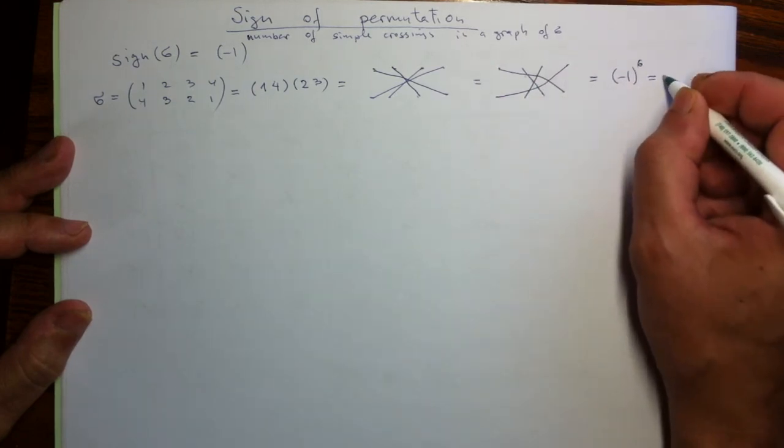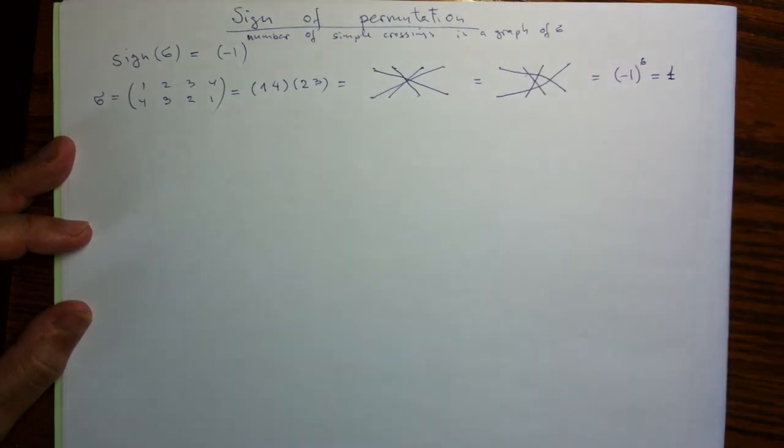So the sign of my permutation is positive one. And that is practically more or less good. Not the best probably way, but still okay. But it's not terribly good to be used as a definition because I can draw my pictures in many different ways. So there is a question of why the answer will not depend on the way I draw a graph.